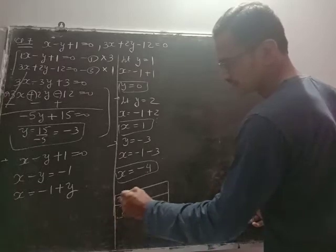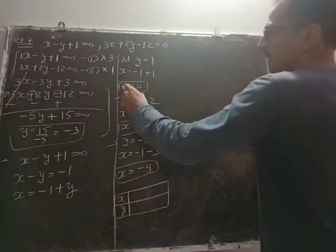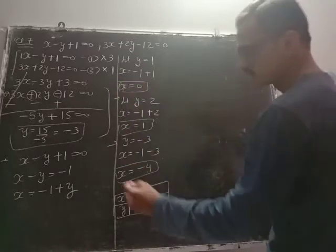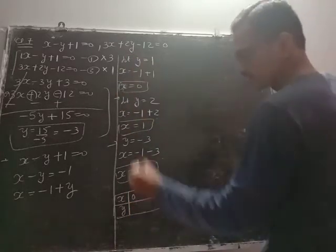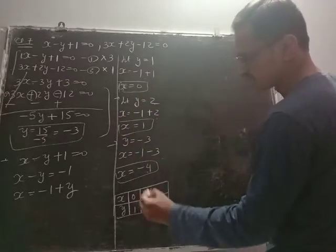Now the table: x is 0, y is 1. x is 1, y is 2. x is minus 4, y is minus 3.